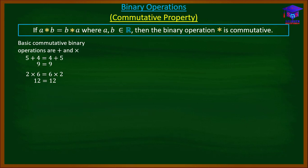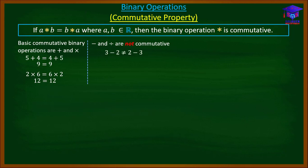On the other hand, subtraction and division of real numbers are not commutative. For example, if you pick three and two: subtracting two from three gives a different result from subtracting three from two. Three minus two gives one, and two minus three gives negative one, which are not the same. Therefore subtraction of real numbers is not commutative.